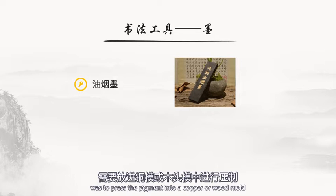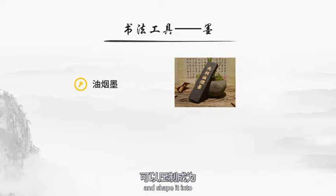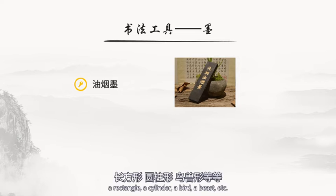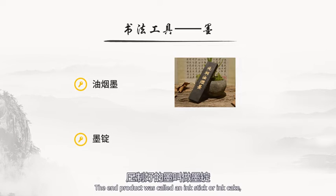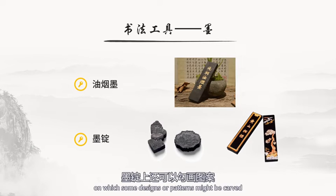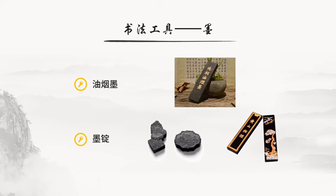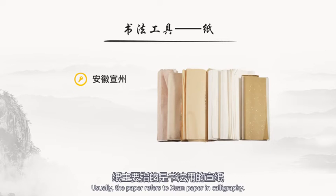书法创作常用的是油烟墨，它由桐油烟制成，再加入胶和香料，墨色黑而有光泽。墨在制作好以后需要放进铜模或者木头模中进行压制，可以压制成为长方形、圆柱形、鸟兽形等等。压制好的墨叫做墨锭，墨锭上还可以勾画图案，成为一种艺术品。